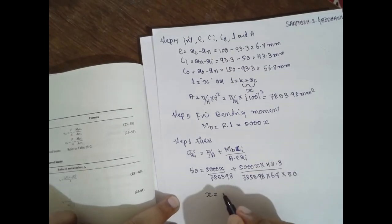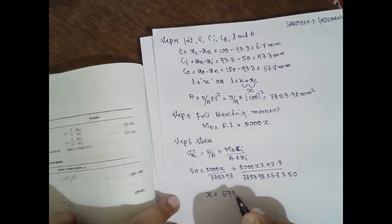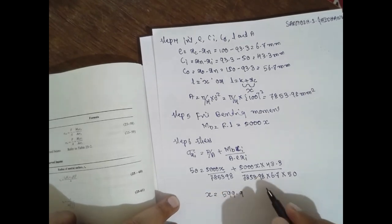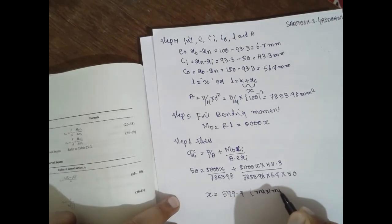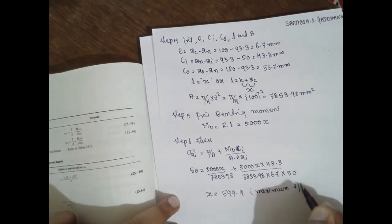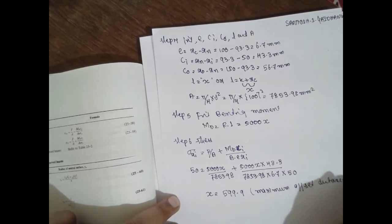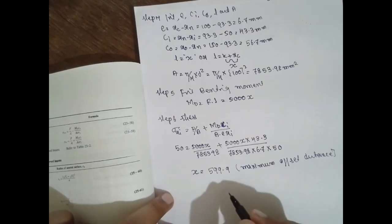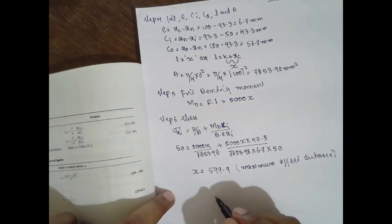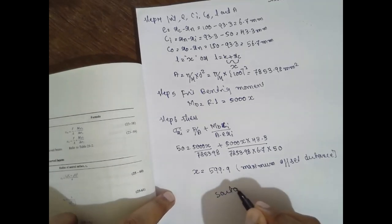Therefore, x is nothing but 599.9. It is the maximum offset distance. Thank you very much.